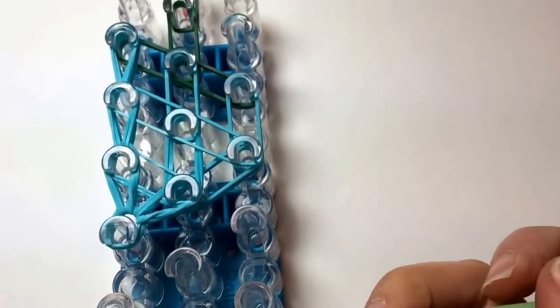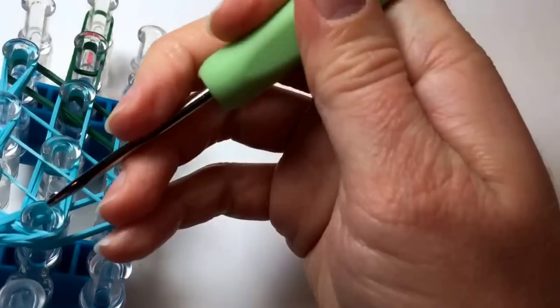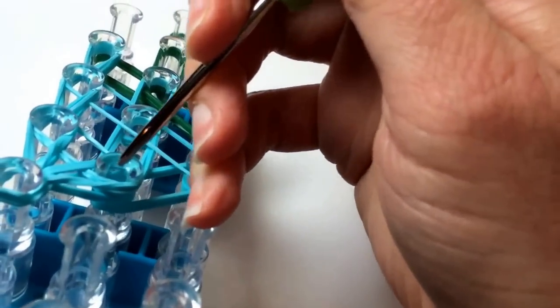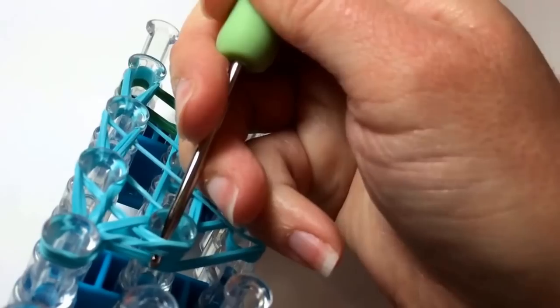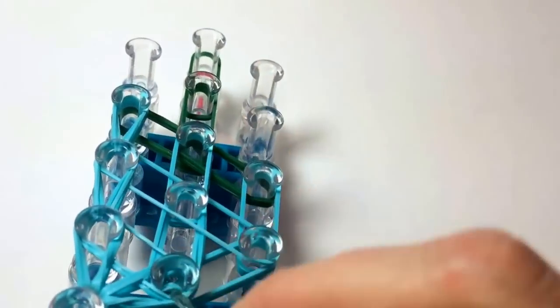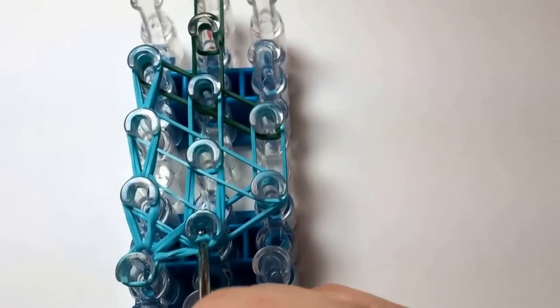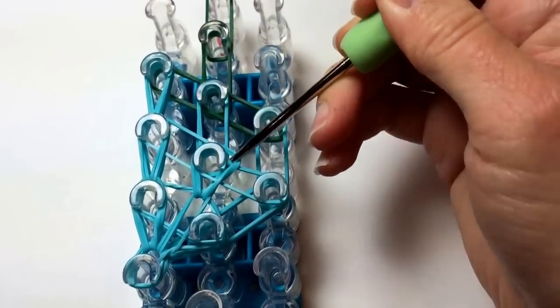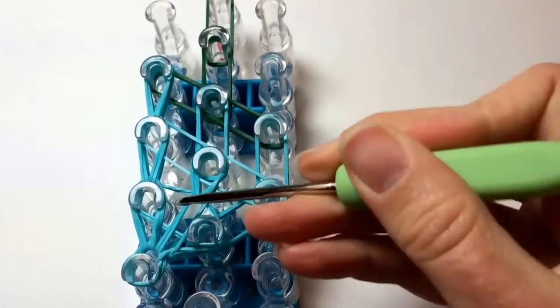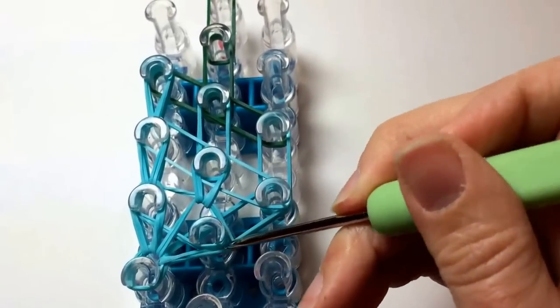And then we are ready to do the middle row. So there is a cap band here too. You want to get underneath that cap and catch just those two rubber bands that go forward. Place that one back around where it is supposed to be.